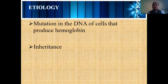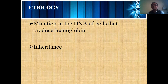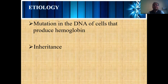Why does this occur? This occurs because of a mutation in the DNA of the cell that produces hemoglobin. Mutation is a condition of abrupt, sudden, immediate change. These changes occur in the DNA of the cell responsible for producing hemoglobin, and this disorder is inherited — transferred from one generation to the next.